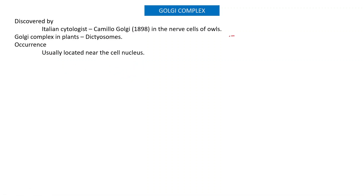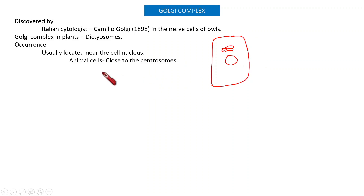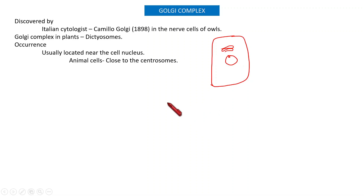Regarding the occurrence, in a typical cell the Golgi complex is positioned almost near to the nucleus. In animal cells, it is more closer to the centrosome. In non-polarized cells, many Golgi complexes exist, not just a single one.